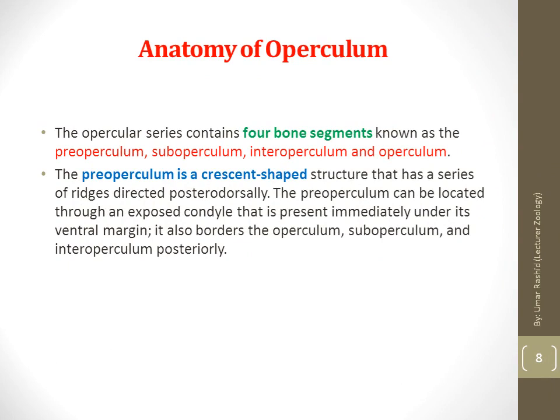As already discussed, the opercular series contains four bone segments: pre-operculum, sub-operculum, inter-operculum, and operculum. The pre-operculum is a crescent-shaped structure with a series of ridges directed posterodorsally. It can be located through an exposed condyle present immediately under its ventral margin, and it also borders the operculum, sub-operculum, and inter-operculum posteriorly.